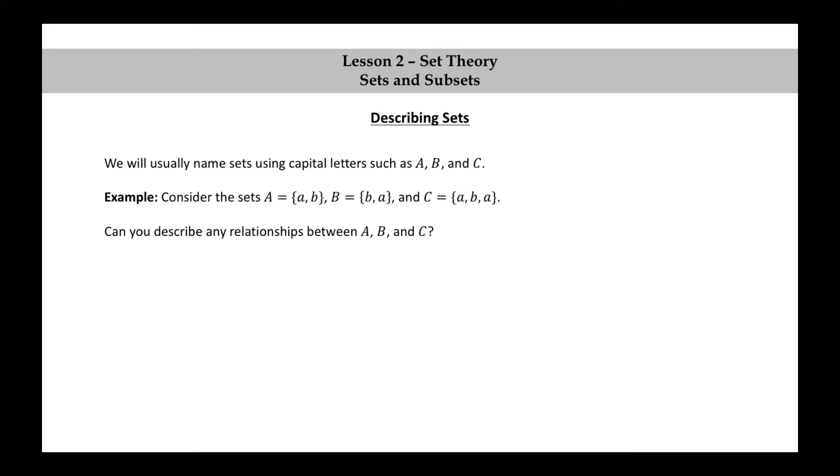Consider the sets A equals the set consisting of A and B, B equals the set consisting of B and A, and C equals the set consisting of A, B, and A. Can you describe any relationships between the sets A, B, and C?